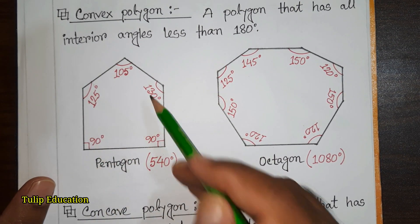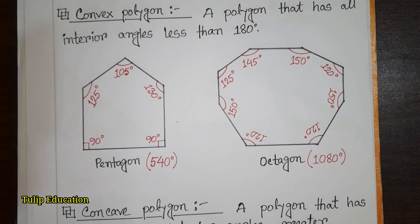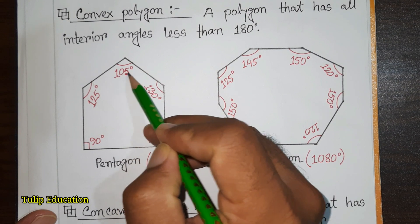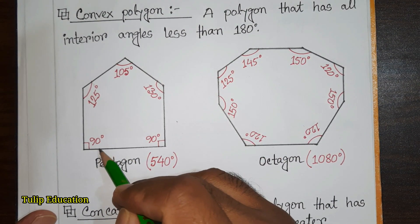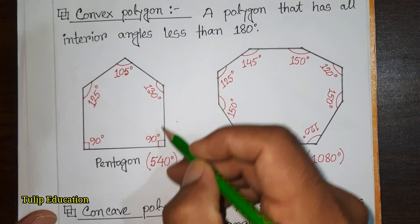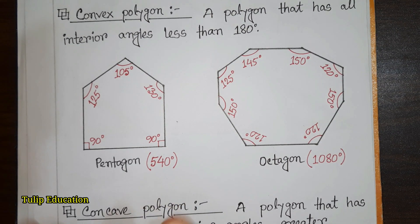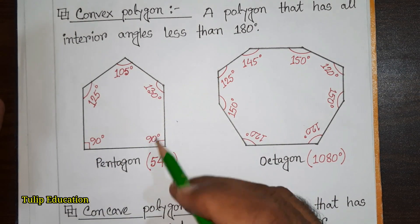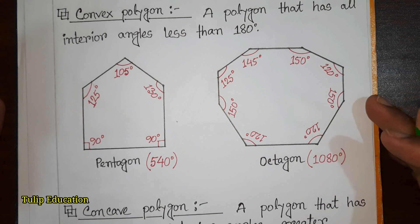Here we can see five angles: one, two, three, four, five. If we measure all the angles, this angle is 105 degrees, this is 125 degrees, this is 90 degrees, this is 90 degrees, and this one is 130 degrees. No angle is greater than 180 degrees, so it is a convex polygon.